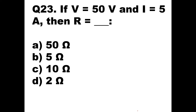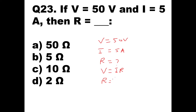Question number 23: if voltage V = 50 volt and current I = 5 ampere, then how much is R? We know that V = IR, so R = V/I = 50 divided by 5, which equals 10 ohms. So R = 10 ohms, and the answer is option C, 10 ohms.